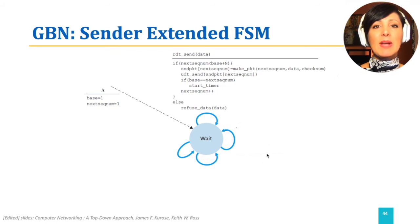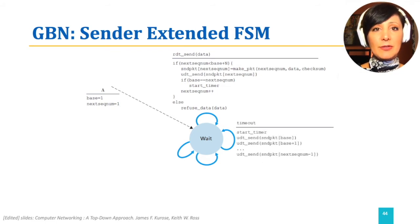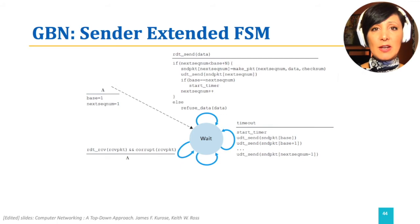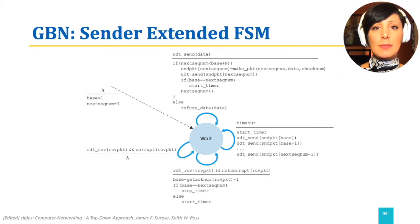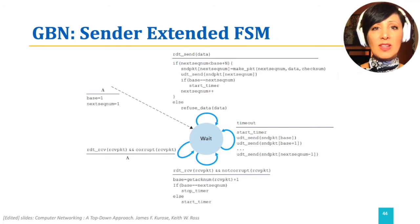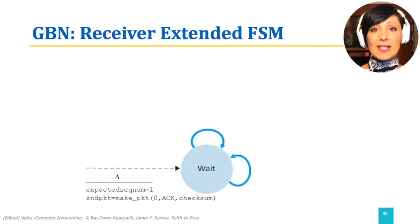If a timeout happens, all the unacknowledged packets on the fly will be retransmitted. If an ACK packet is received but is corrupt, nothing additional will be done and the wait will continue. If an ACK packet is received and it is non-corrupt, it will be checked against the base and updated to the new value. And if ACKs for all the sent packets are received, the timer will be stopped.